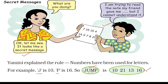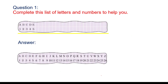You can see that 10, 21, 13, 16 is written and it means JUMP. Now moving to the next page — complete the list of letters and numbers to help you. Here you have to write the English letters and their corresponding numbers, and you have to complete it in this way.